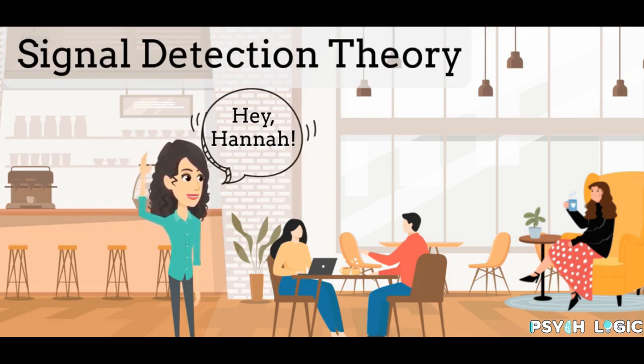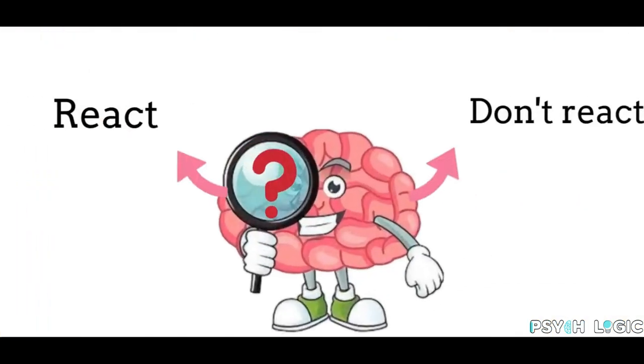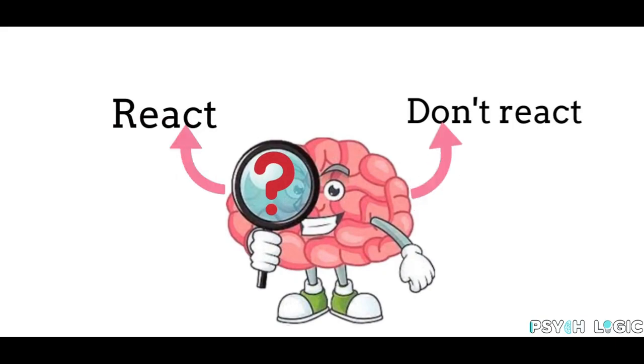That's where Signal Detection Theory comes into play. Our brain detects that sound and reacts to it. In the background, everything was happening, but our brain differentiated our friend's voice and our name from the background noise. This is Signal Detection Theory.